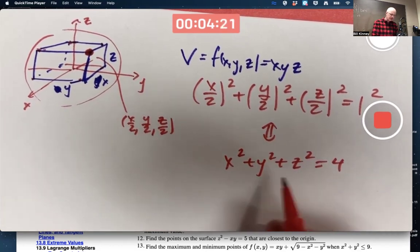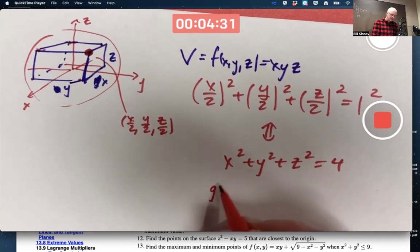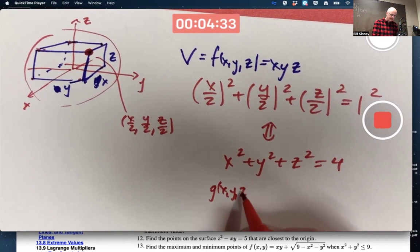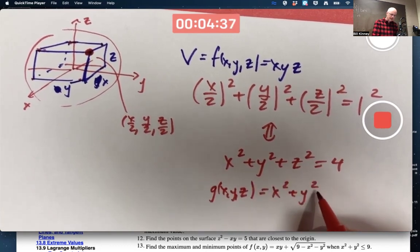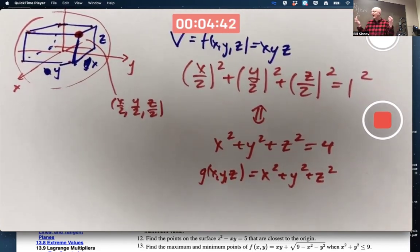And effectively, this is like your constraint. This is essentially your G of X, Y, Z function. I mean, you could subtract 4 from both sides. But it doesn't really matter. Because the derivatives would be the same either way. I could take G of X, Y, Z to be X squared plus Y squared plus Z squared. Or that function minus 4.